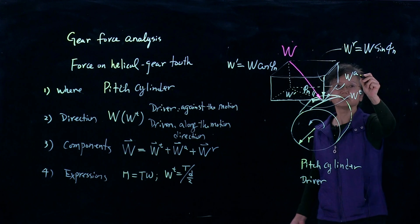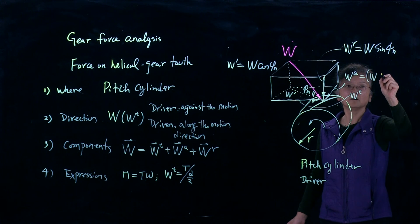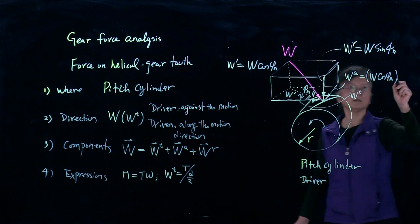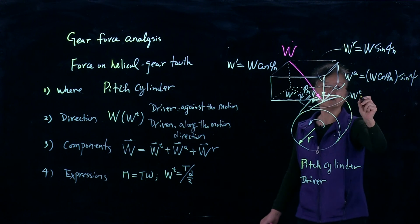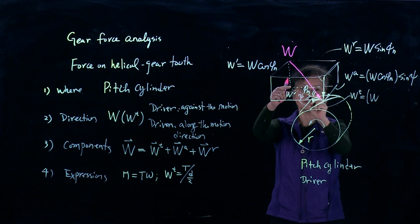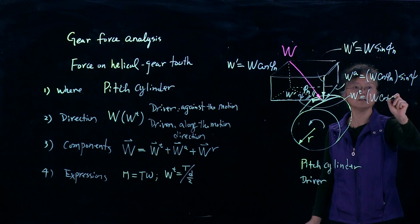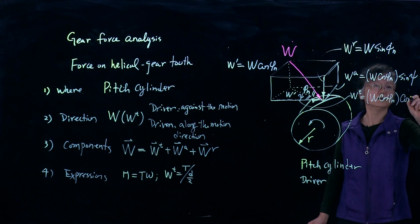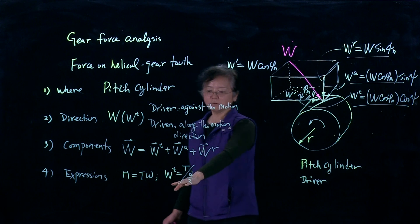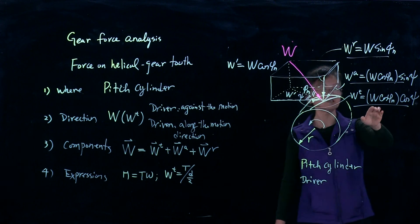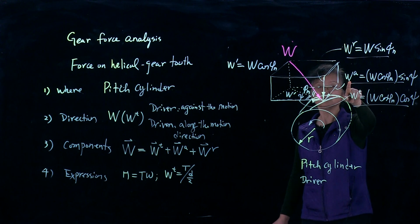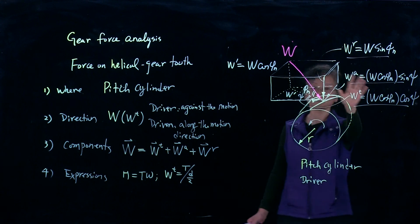With W-prime, we can resolve the remaining components immediately. The axial force Wa equals W·cosine(φn)·sine(ψ), where ψ is the helical angle. The tangential force Wt equals W·cosine(φn)·cosine(ψ). So all three force components are resolved. Since we know Wt from torque, we can back-calculate the normal force W, then use it to solve Wa and Wr. All force components are solved.